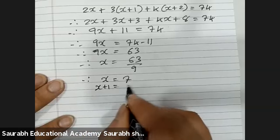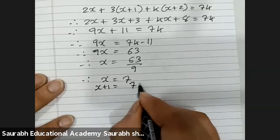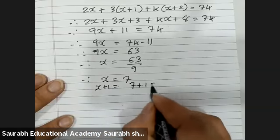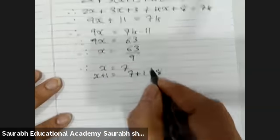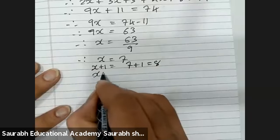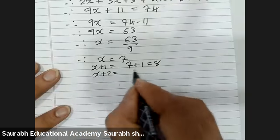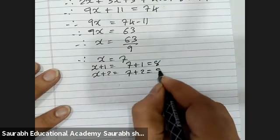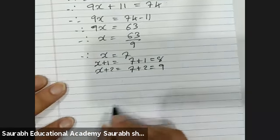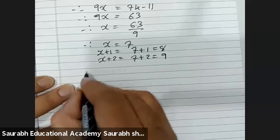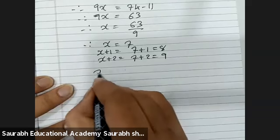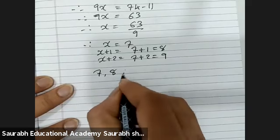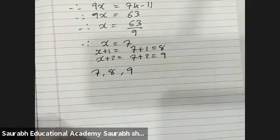The second number, x plus 1, is 7 plus 1 equals 8. The third number, x plus 2, is 7 plus 2 equals 9. So the three consecutive integers are 7, 8, and 9.